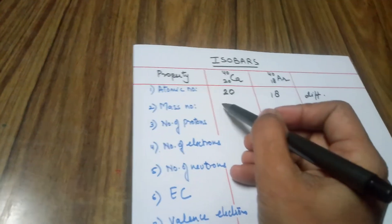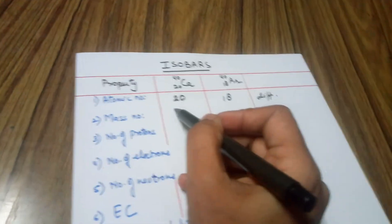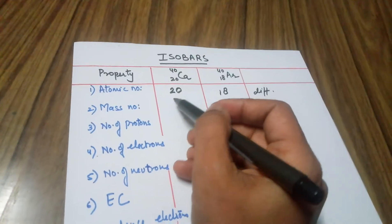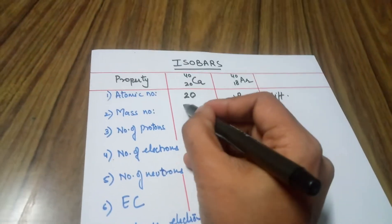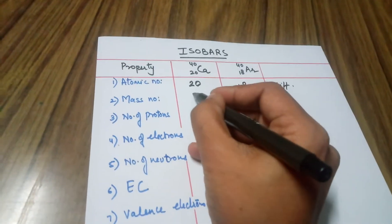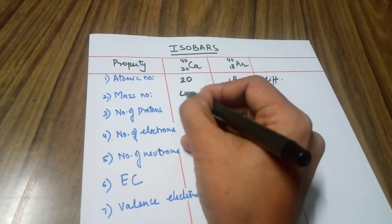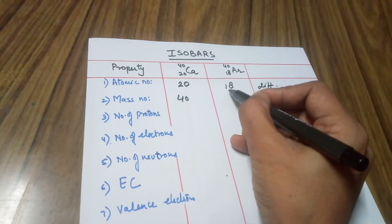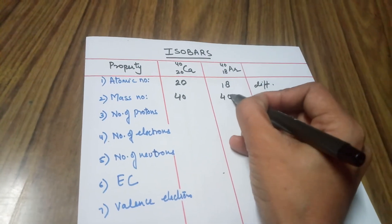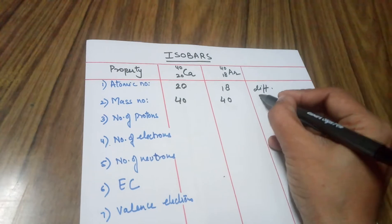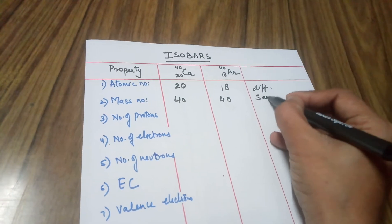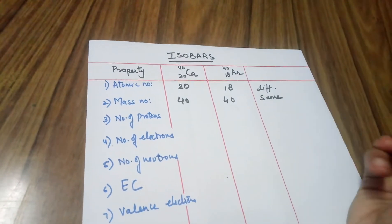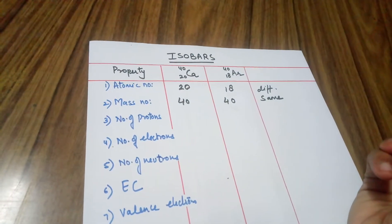Moving to the mass number: the mass number for calcium is 40, and the mass number for argon is also 40, which means they have the same mass number.